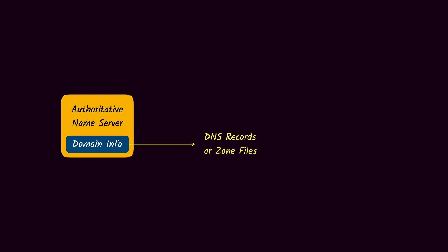If you have ever purchased or set up a domain there is a high chance that you might have set up the DNS records. Some of the common DNS records are the A record, CNAME, MX, TXT, and the NS. In this lesson we are going to look at each of these and understand the purpose and usage of each of these records.